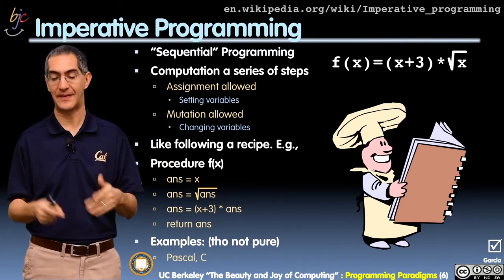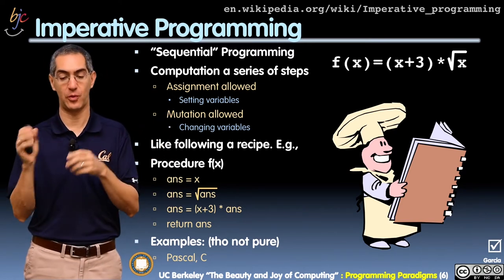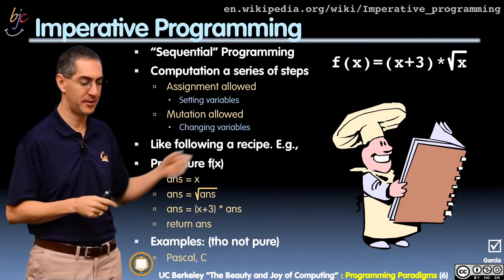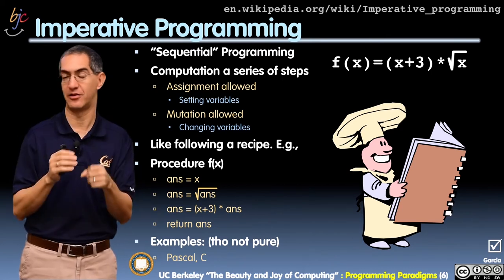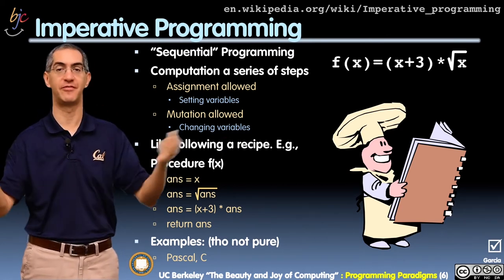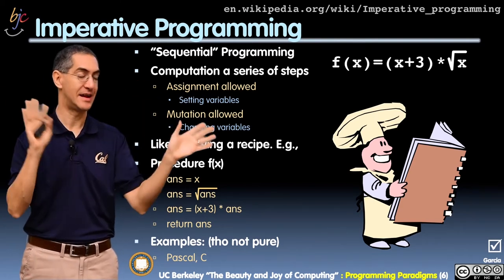If you were to recreate that same function—f(x) = (x+3) * √x—the way you could do that is by saying, here's the procedure: f of x. Answer equals x. Let's start with answer. I'm going to return an answer. But I say answer equals x. Uh-oh, there's an equal sign. Already we're not functional, because I've used an equal sign. You're not allowed to have any assignment in a functional model. So with assignment, all of a sudden you know you're out of the functional world.